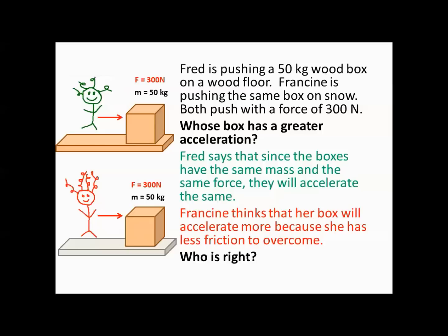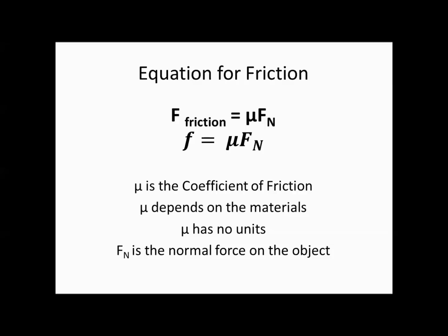Who is right? We're going to talk about friction. Our general equation for friction is that the force of friction equals mu times the normal force. Mu is the coefficient of friction, and it depends on the materials of the two objects that are interacting. So for example, wood on wood is going to have a different friction than metal on metal. Another way we write friction is with the lowercase f.